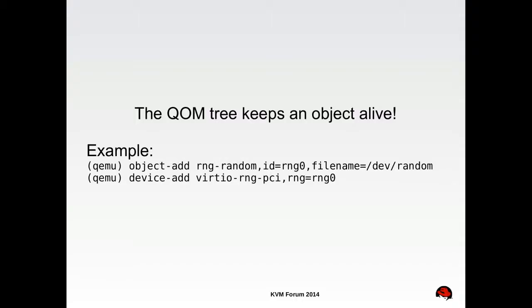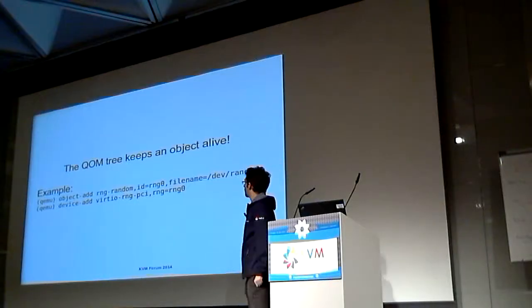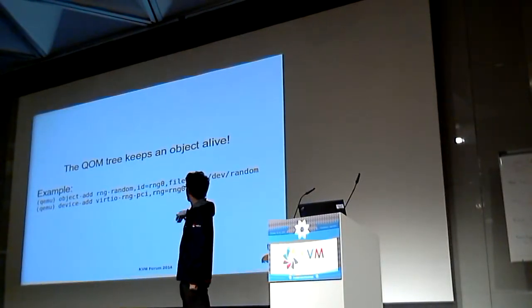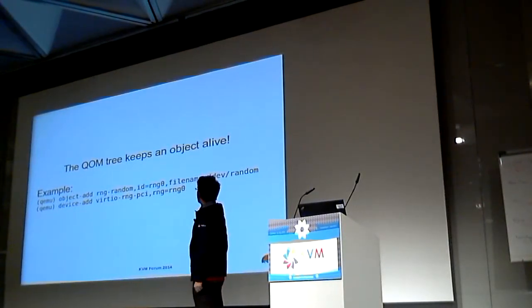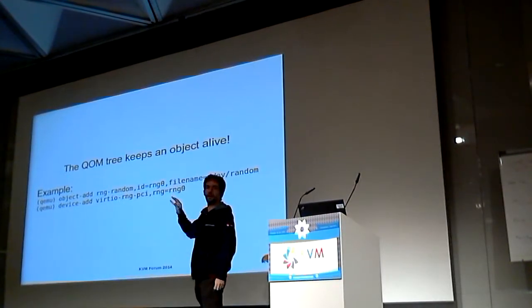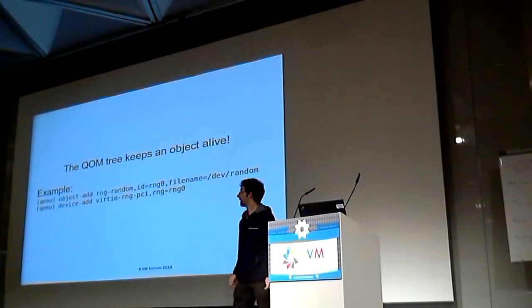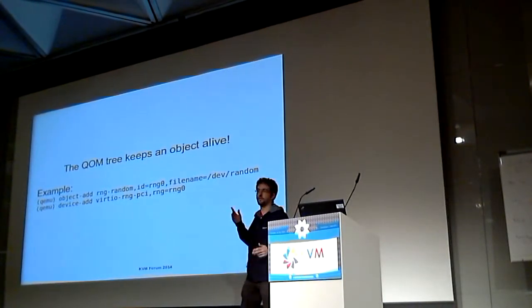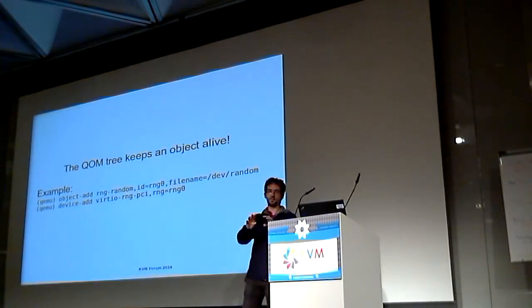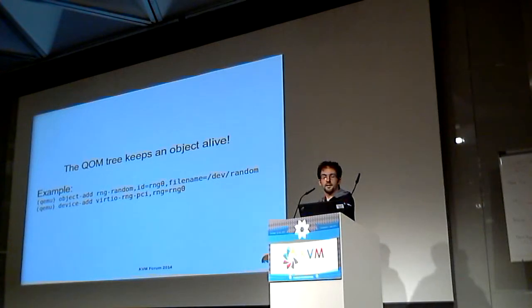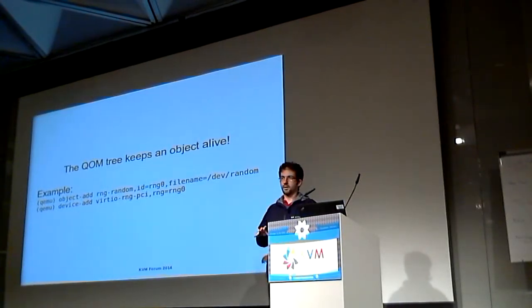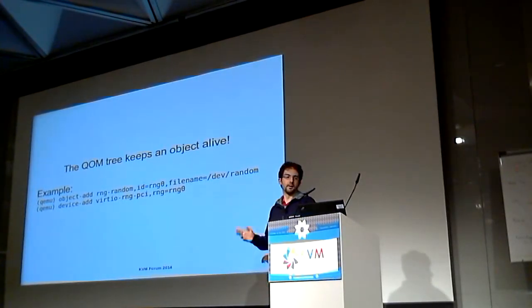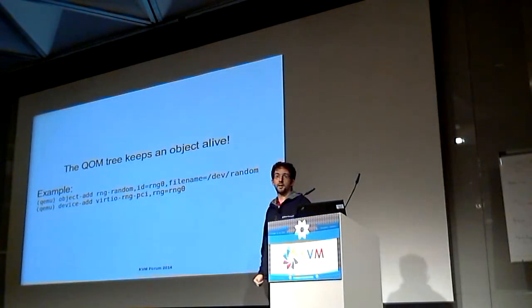The QOM tree is what keeps objects alive. If you want to hotplug a virtual RNG device, you first create the backend, and then you attach the backend to the virtual device itself. In between the two commands, the only reference to the RNG backend comes from the composition tree. You couldn't do any sort of hotplug if it wasn't for this sole reference kept in the composition tree. This leads us to how objects die, what the lifetime of an object looks like, and why this composition tree is so useful for multithreading.